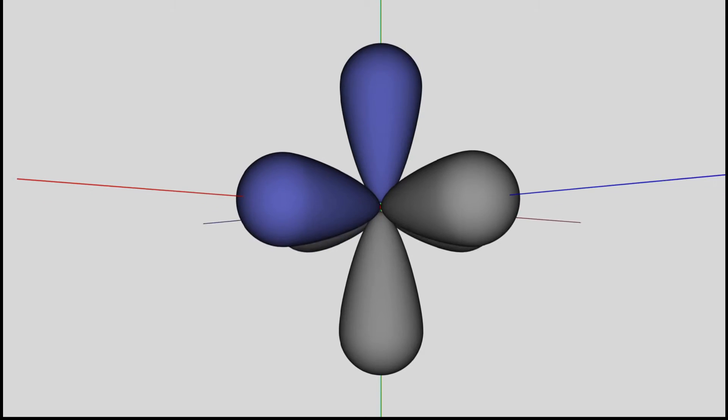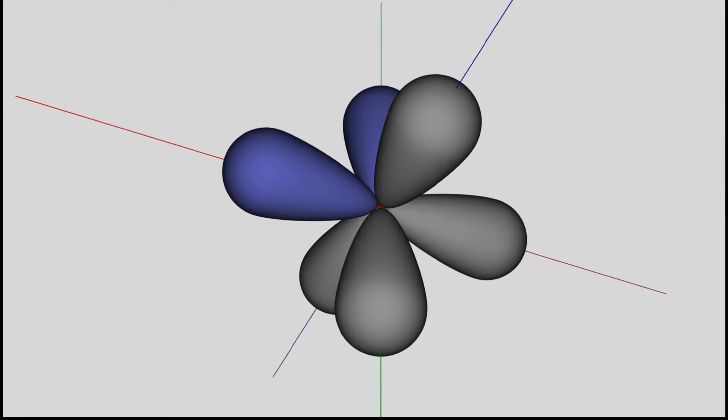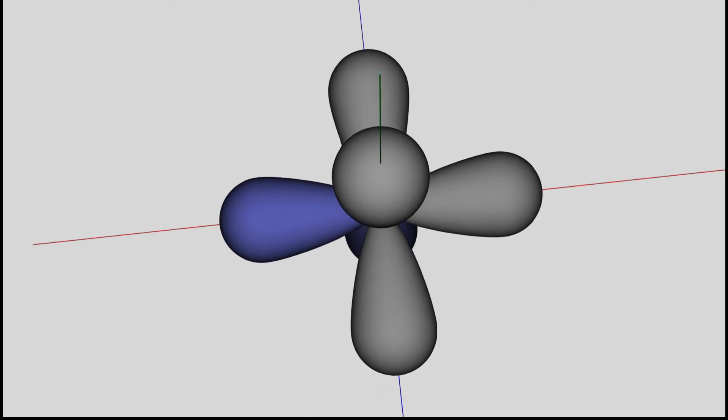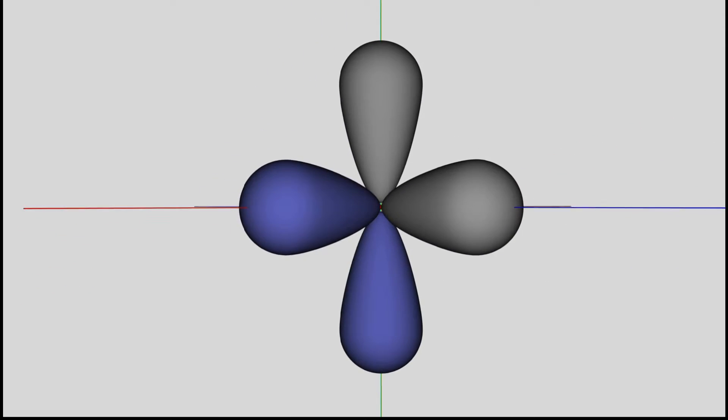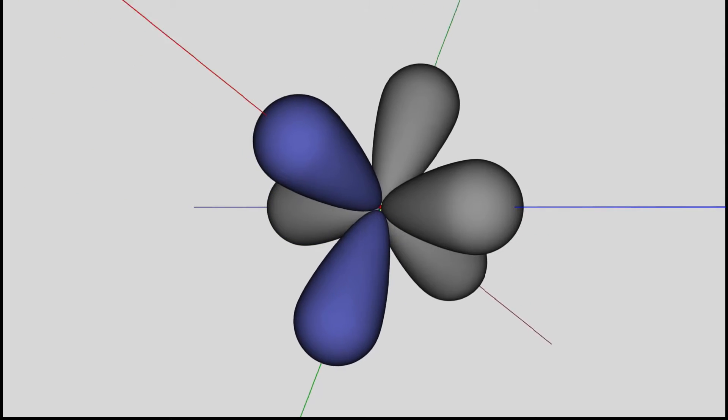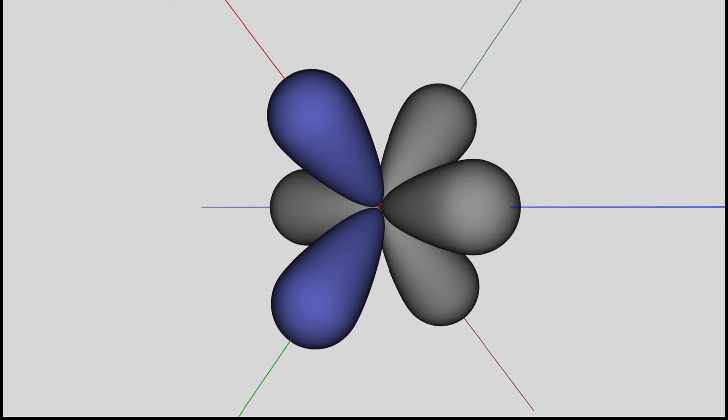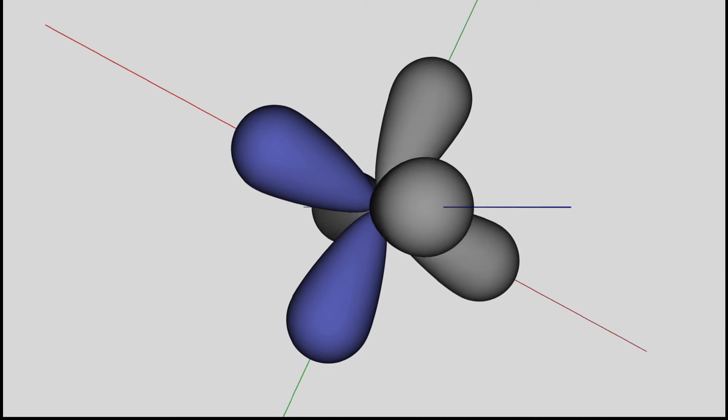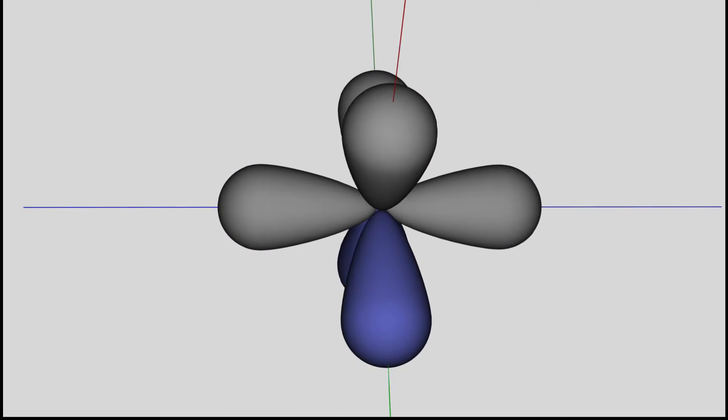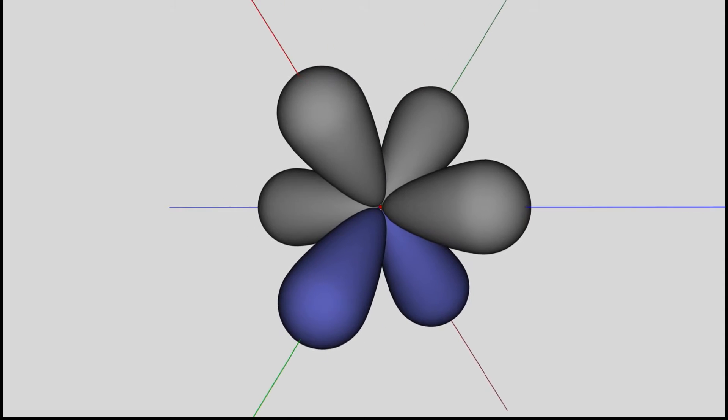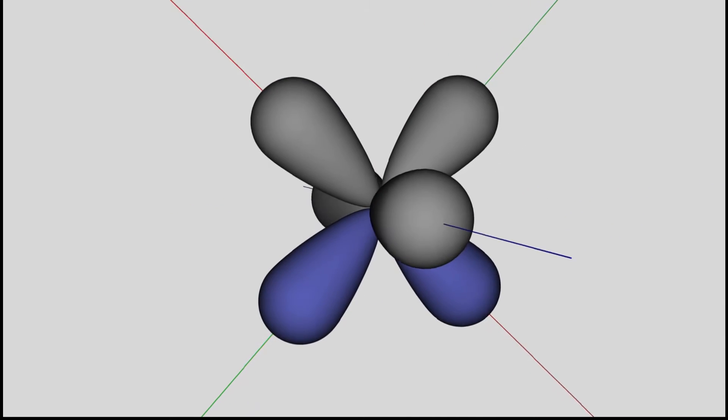Orbitals filled with the full or just half the number of electrons possible are favored configurations. The outermost p orbital can be filled with the complete number of electrons by sharing electrons with other atoms while forming covalent bonds.